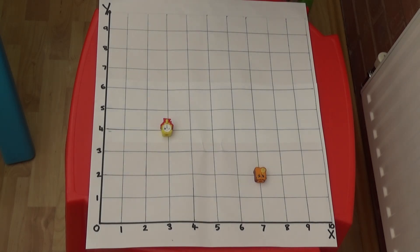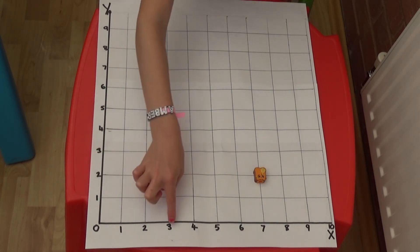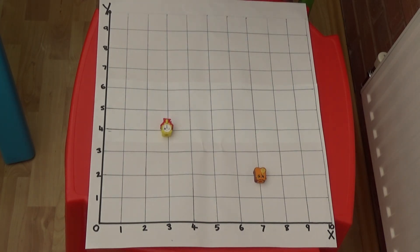I need to look at the numbers on both the x and the y-axis to describe where it is. We always look at the number on the x-axis first. If I look along the x-axis I can see the toy is positioned above the three. So the x-axis coordinate is three.